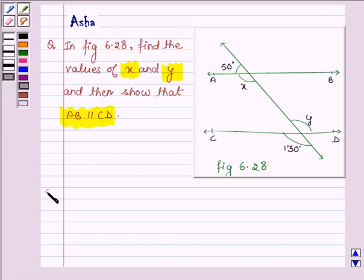So let us begin with the solution and let us first write what we are given. Now on observing this figure we find that we are given two lines AB and CD such that